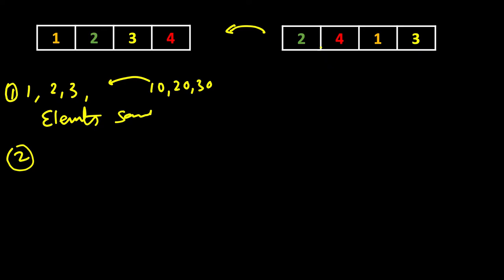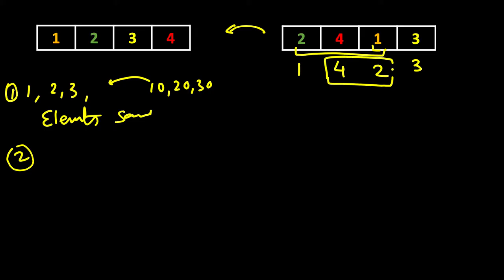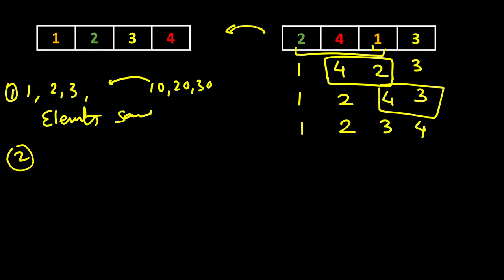Let's see an example. We can reverse the subarray containing 2, 4, 1 to get 1, 4, 2, while 3 is not part of this. Then we reverse the entire subarray to get 1, 2, 4, with 3 remaining. Then we take this subarray and reverse it to get 1, 2, 3, 4. So you are allowed to reverse subarrays — here we took length 3, here we took length 2, as per the requirement.